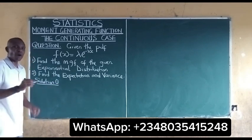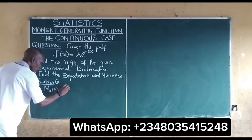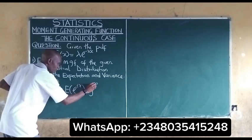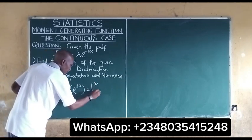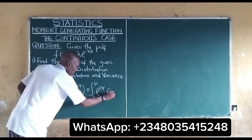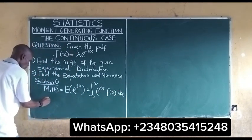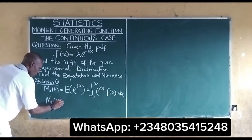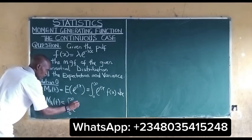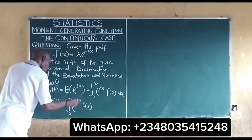We should recall that for the moment generating function, we have the integral of e^(tx) multiplied by f(x) dx. So what we will be solving uses e^(tx) · f(x). This is what we will be using.